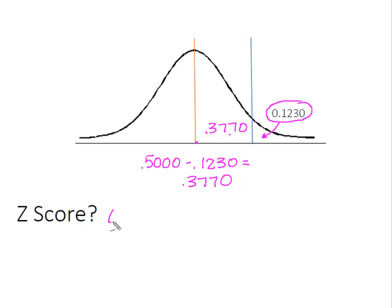Now I'm going to look for the z-score that's associated with 0.3770 or 37.70% of the data between the mean and this point on the curve.